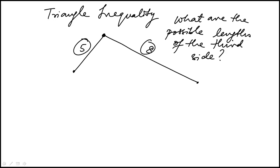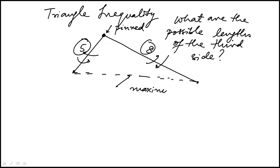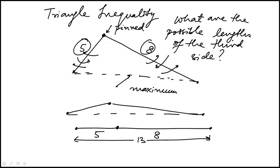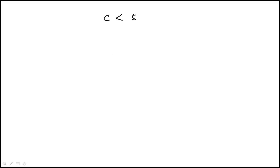Think of these two sides as rods pinned at one end that can rotate. To maximize the third side, you stretch the rods out flat. When completely flattened, the third side would be 13, but that's a straight line — not a triangle. Because it must be a triangle, the third side has to be strictly less than the sum of 13. It can be 12.98, since triangle sides don't have to be whole numbers.